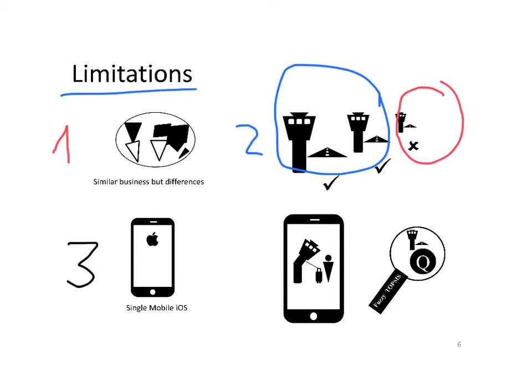Third, only one single mobile operating system was used to analyze airport mobile websites and applications. And fourth, although the original aim was to link airport mobile applications and airport quality, at the end it was not possible to do it together, and it was done on a separate basis.